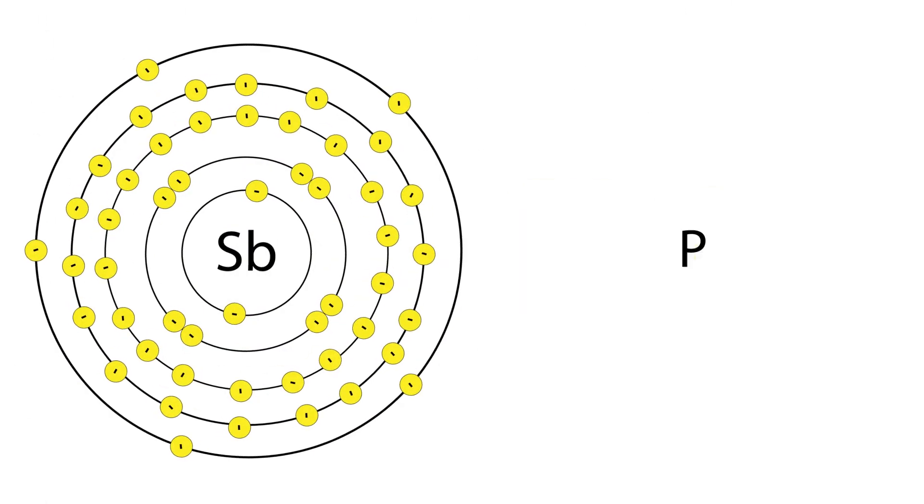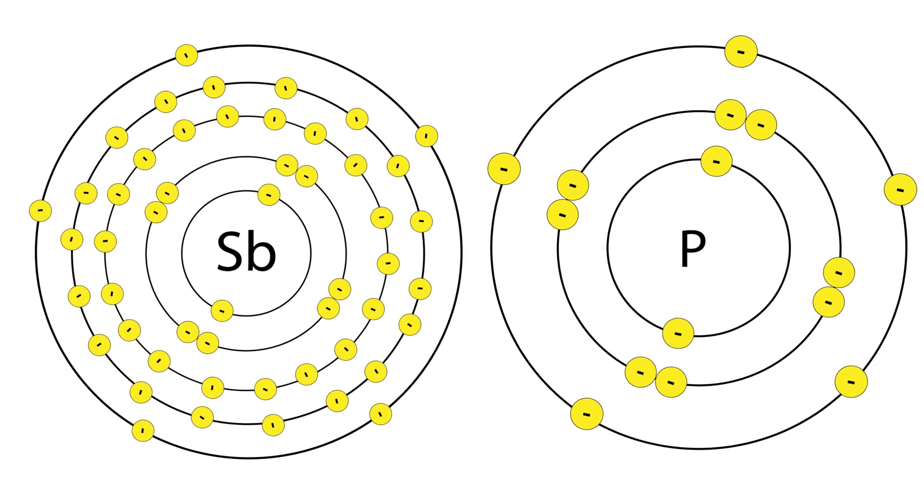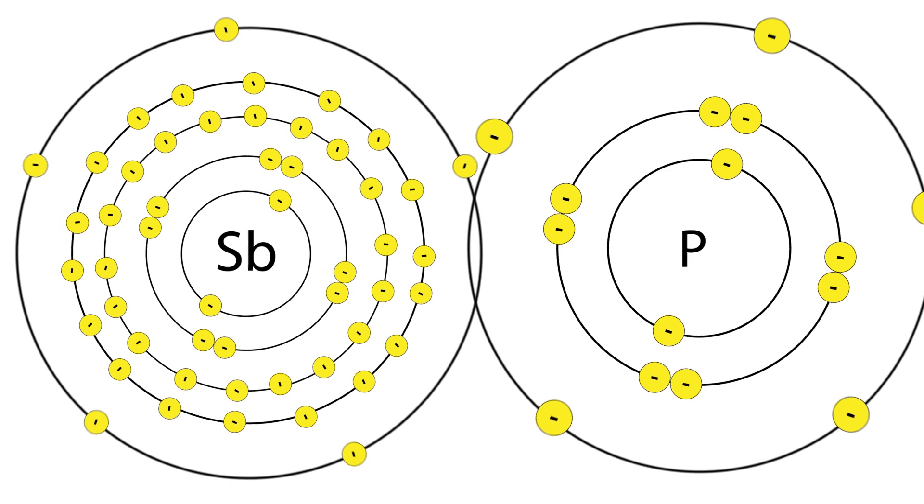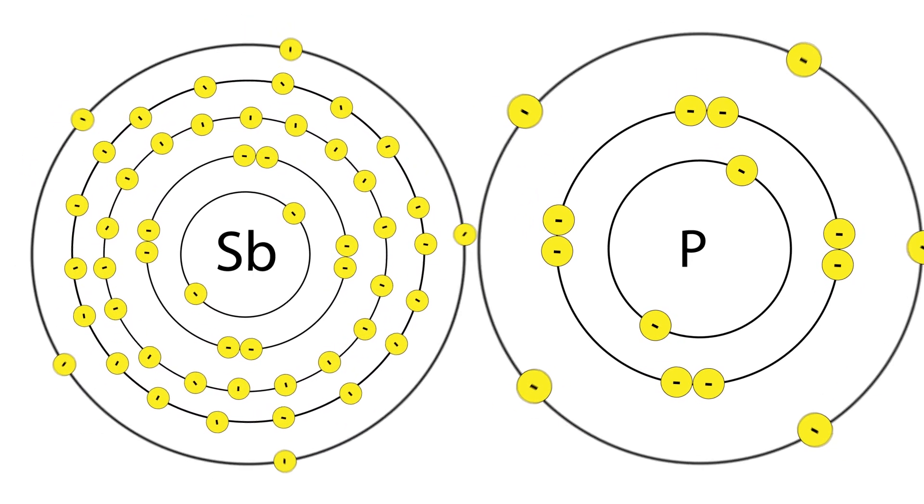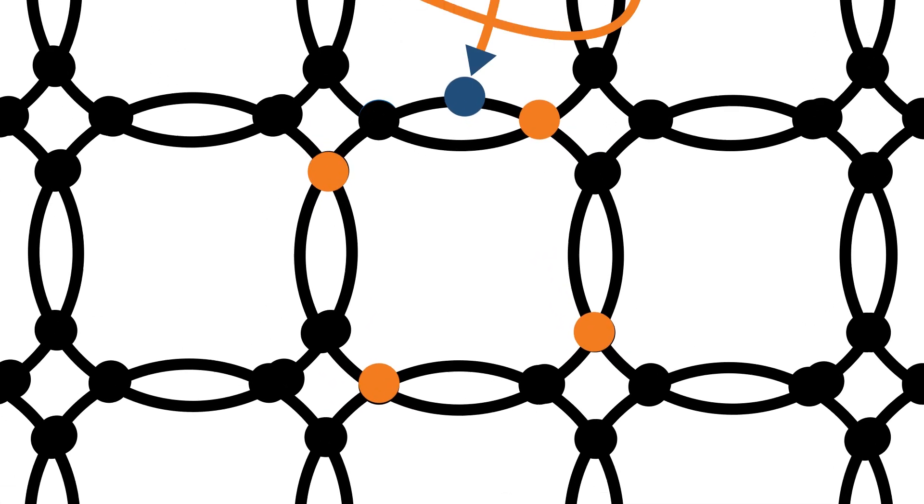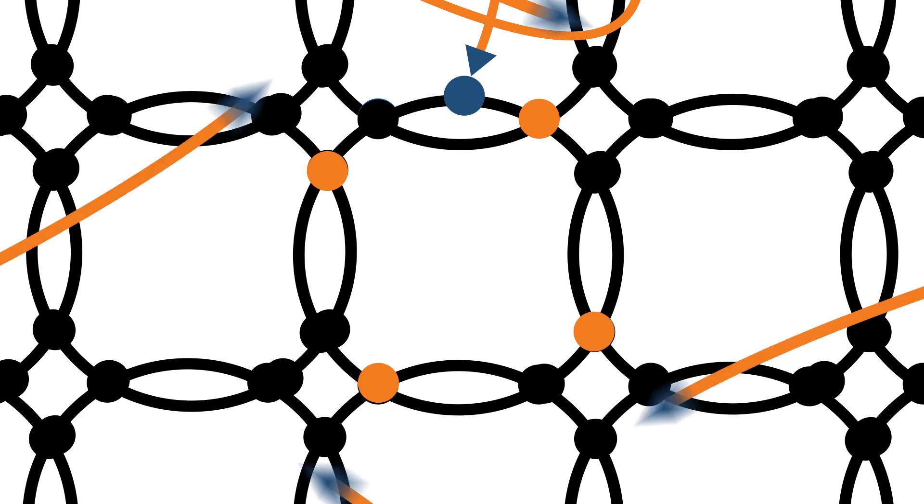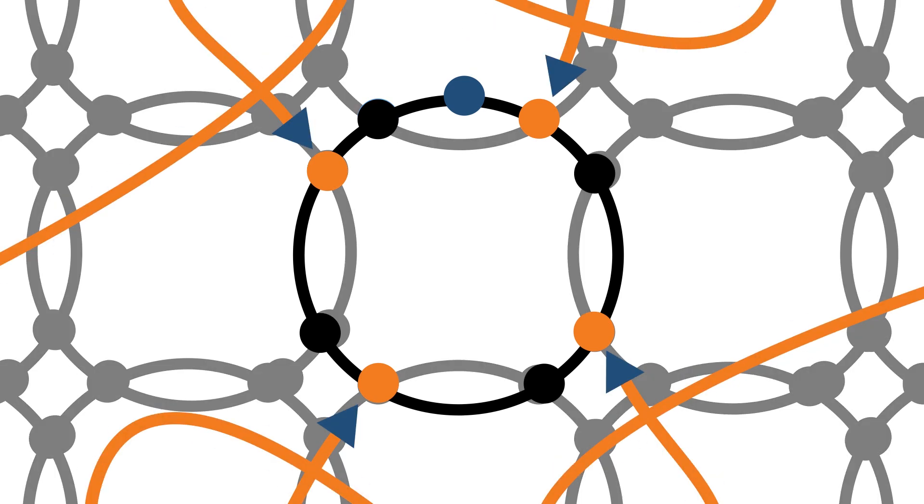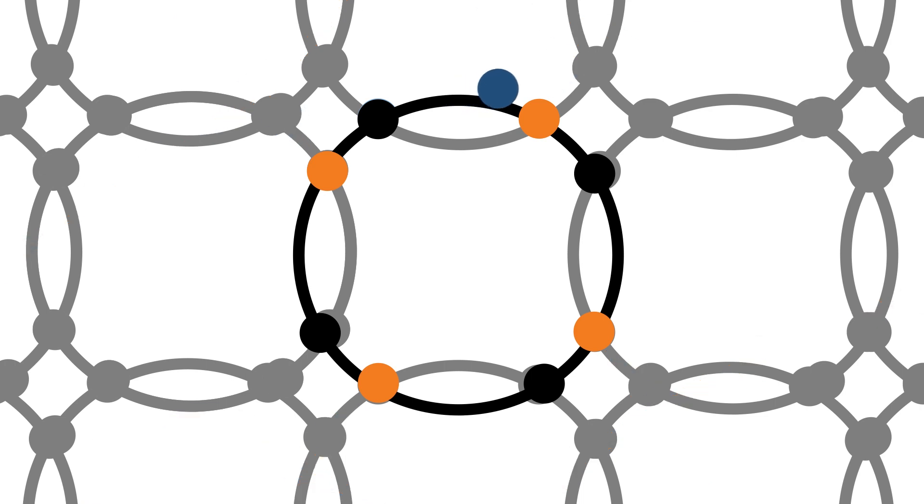In the n-type region, the silicon is doped with an element like antimony or phosphorous. These elements have five electrons in their outer valence shell. One more than what the silicon crystal structure needs. So four of those electrons pair with the silicon atoms, while the fifth becomes a free electron. Free to go wherever the current takes it. These free electrons are negative charge carriers.